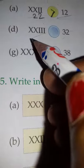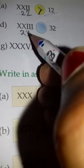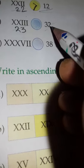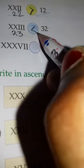Part (d): XXIII - that's XX which is 20 plus III which is 3, equals 23. The other side is given as 32. So which number is greater, 23 or 32? Yes, very good, 32.